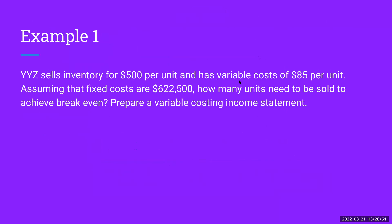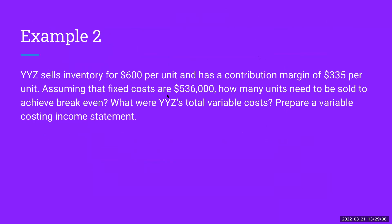Our first example: YYZ sells inventory for $500 per unit, and it has variable costs of $85 per unit. Assuming that fixed costs are $622,500, how many units need to be sold to achieve breakeven? Prepare a variable costing income statement.